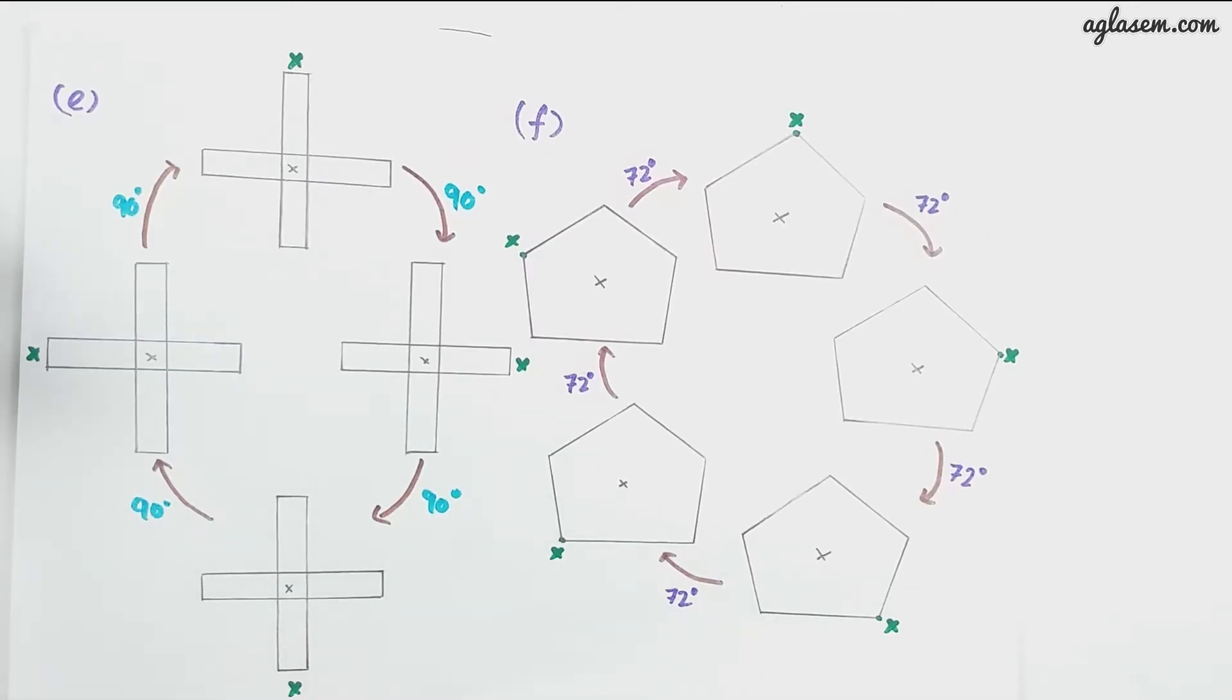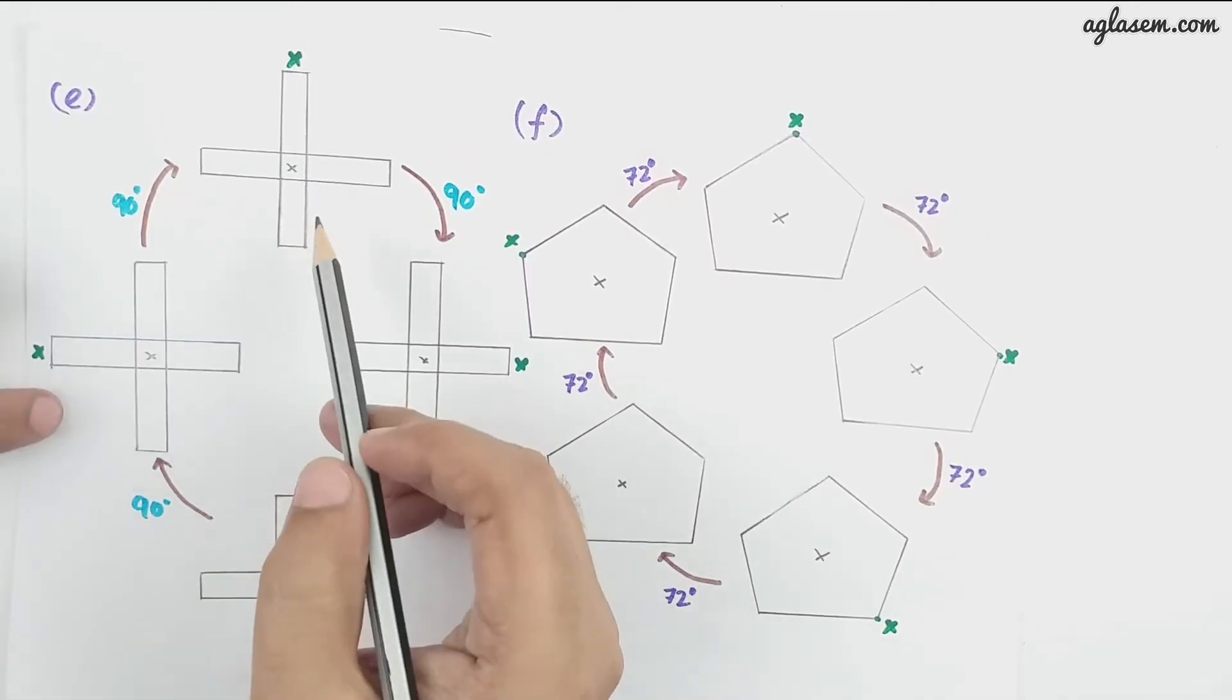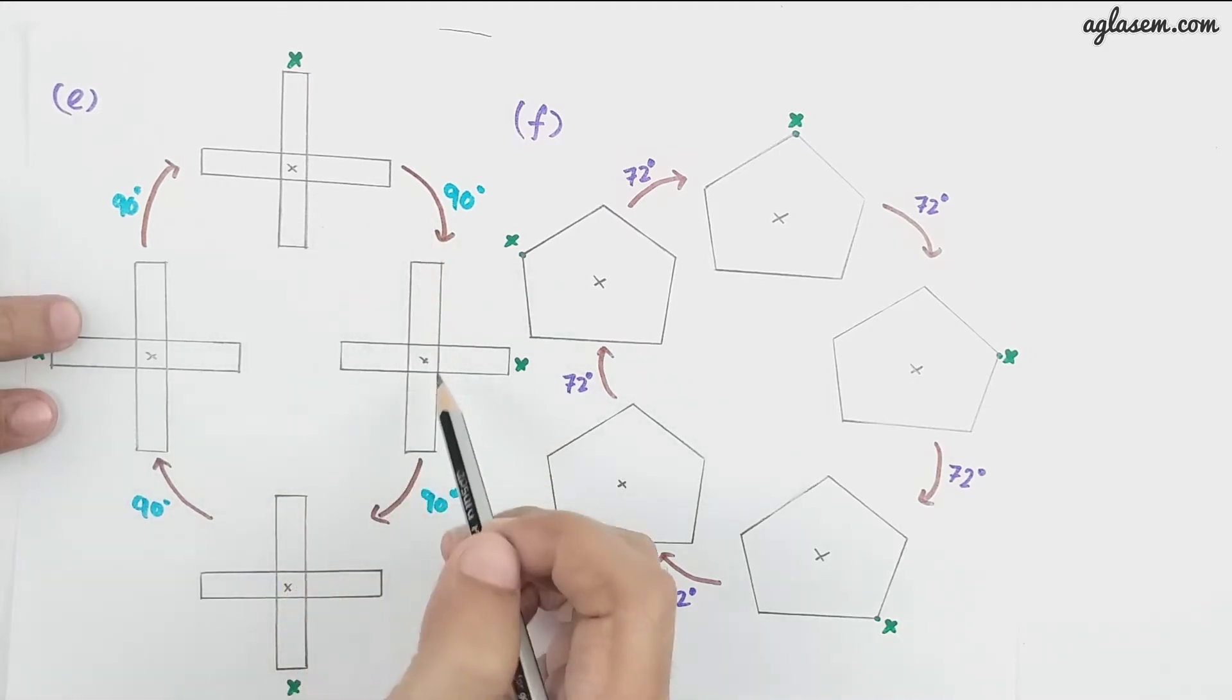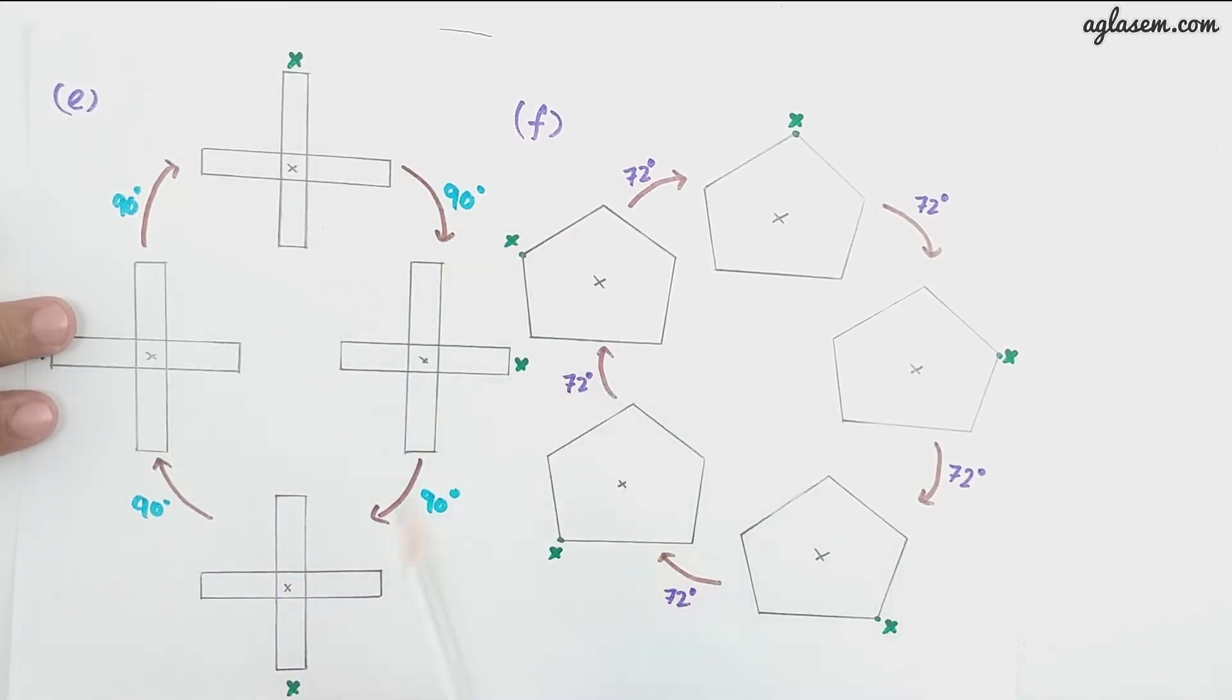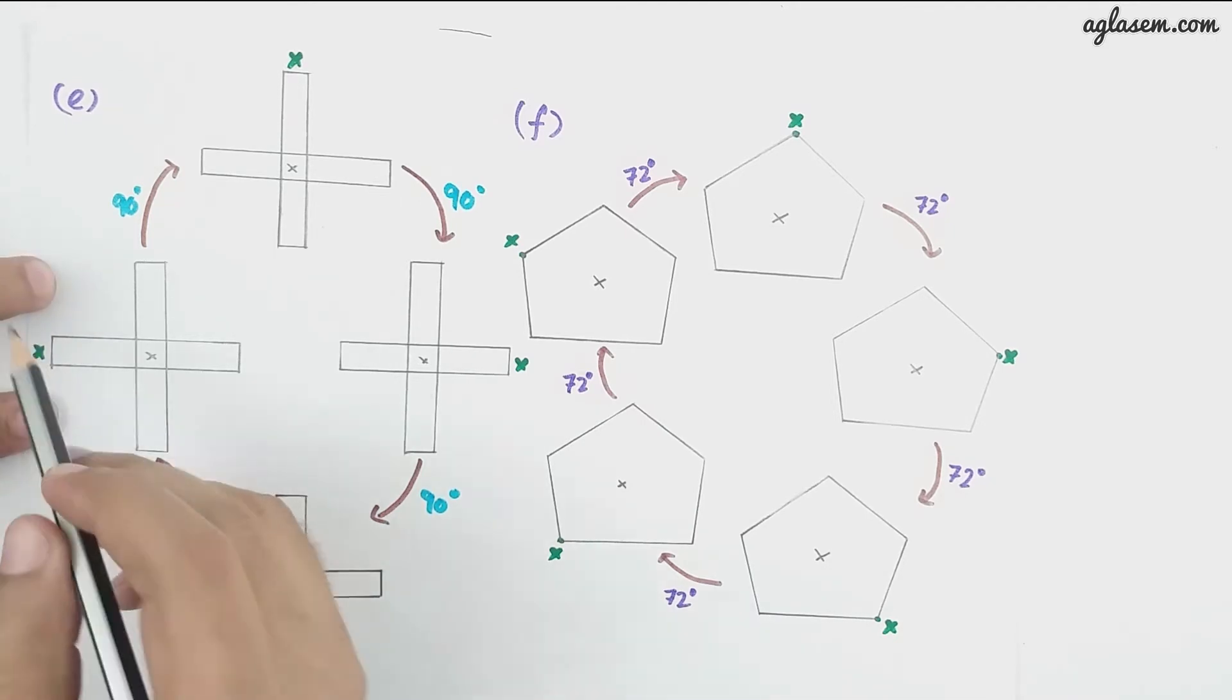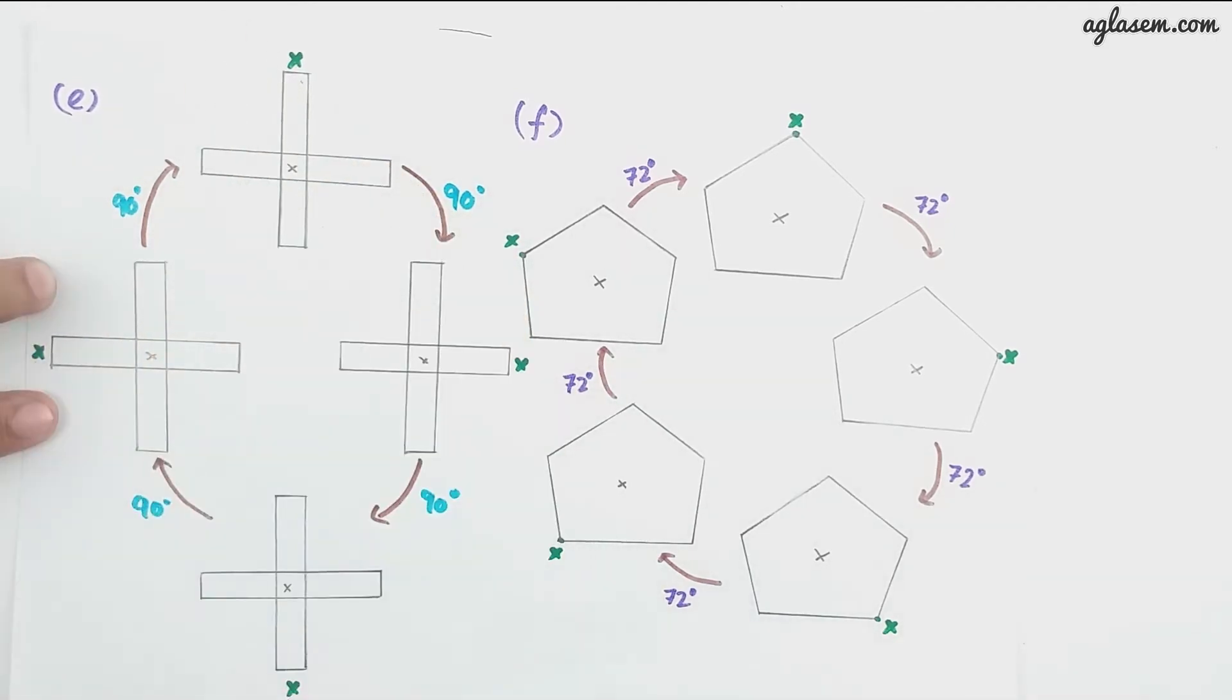Now in the E part, we have this figure. So it will be rotated by 90 degrees, it will be like this. This X position will change. See, it will come here and finally reach this place. So there are four.